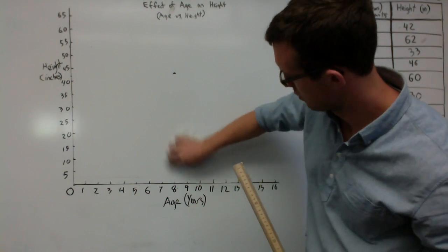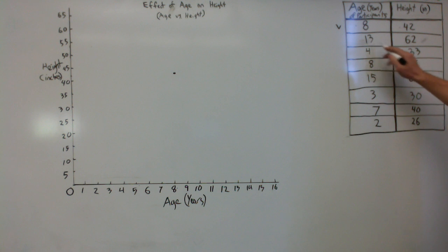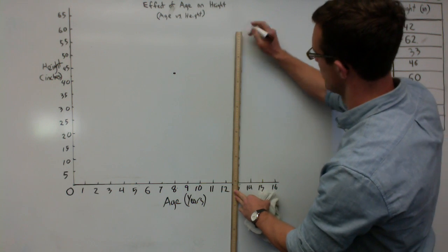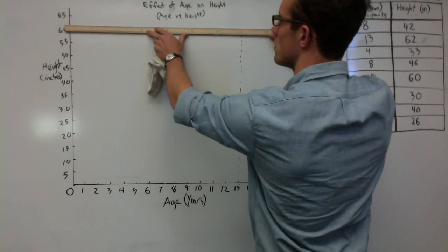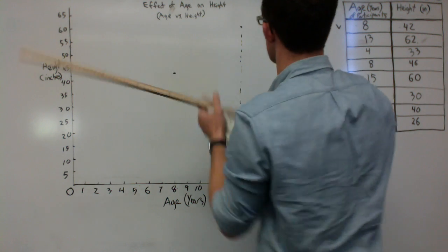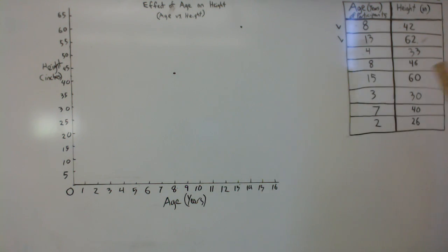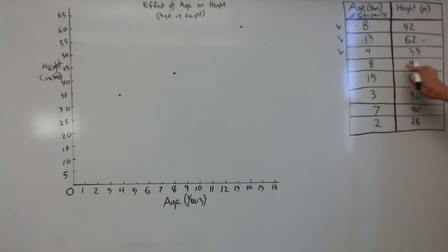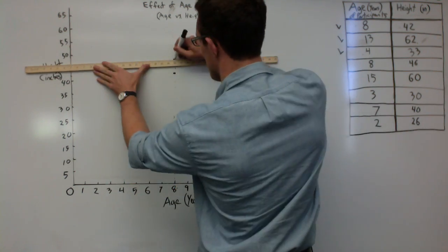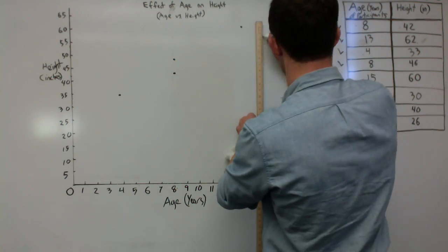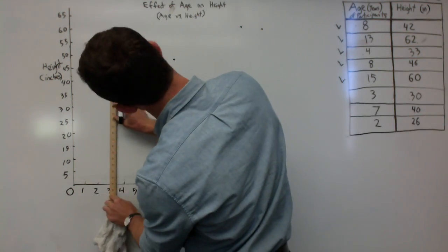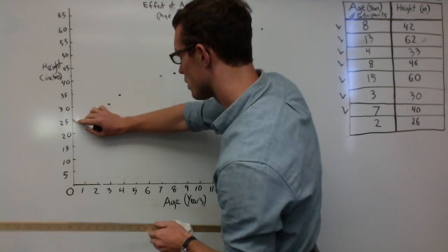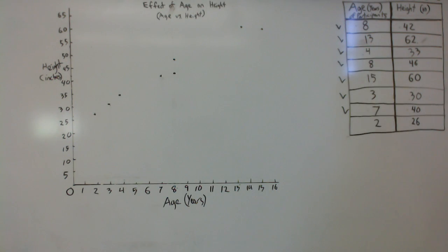You can follow the same process for the next data points. Our next person is 13 years old and 62 inches tall. Use a straight edge to plot your data point directly above 13 years on the x-axis and directly to the right of 62 inches on the y-axis. By continuing this process — moving straight up from the x-axis and straight across from the y-axis, then placing points where those lines meet — we can plot the rest of the data table. When all points are placed and stray lines erased, what remains is a scatter plot: a graph capable of showing us the relationship between our two variables.